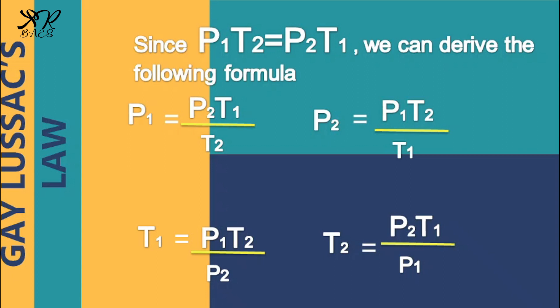We can derive the following formula. In solving for the initial pressure, we use the formula P sub 1 is equal to P sub 2 times T sub 1 all over T sub 2. In solving for the final pressure, we use the formula P sub 2 is equal to P sub 1 times T sub 2 all over T sub 1.